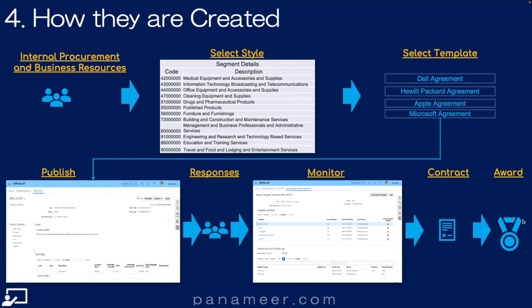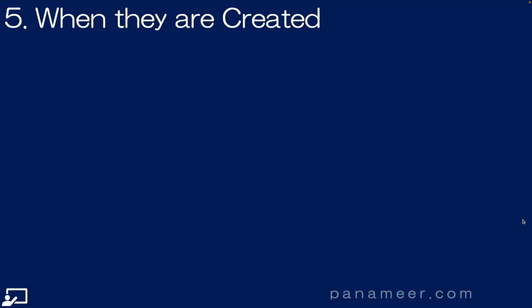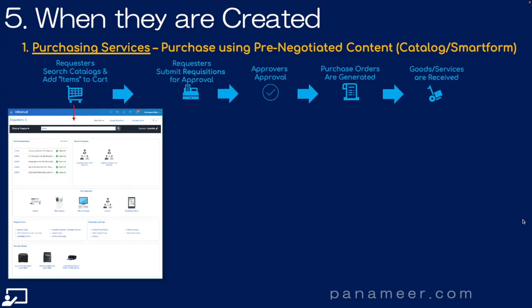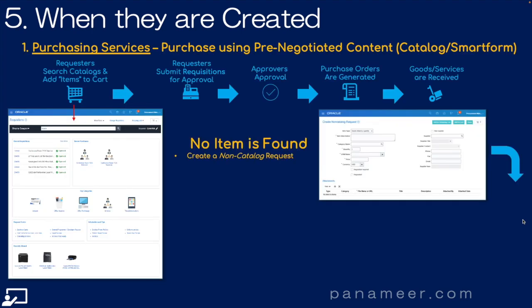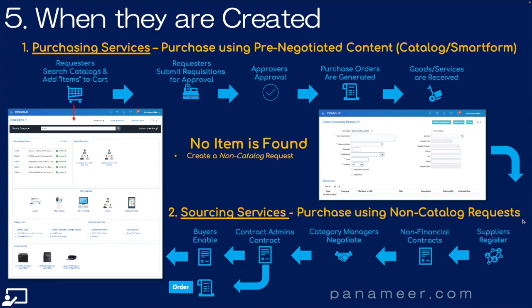And lastly, slide number five: when are negotiations created? Let's walk through the procurement process in two simple steps. Step one: purchasing services are performed, and if no catalog item is found — meaning pre-negotiated content — the sourcing services are performed. As you can see in the slide, negotiations are the third step in the sourcing services. Click the link above to watch a quick video explaining the procurement process in much more detail.